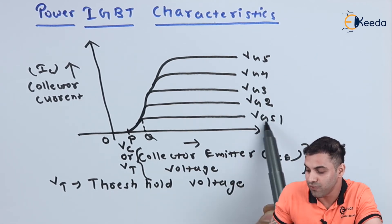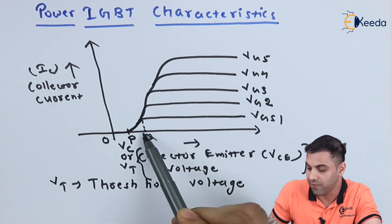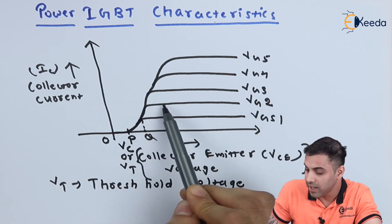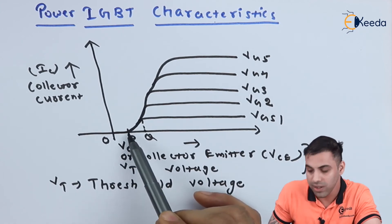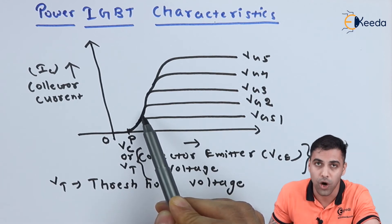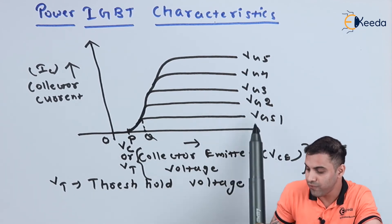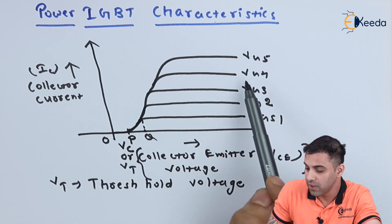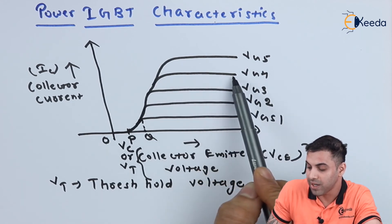For a specific value of the gate-emitter voltage VGS1, the value of collector current is constant after a certain point. If we further increase the gate-emitter voltage to VG2, the collector current increases. Initially there is no flow of collector current; after the collector-emitter voltage crosses the threshold, the collector current slowly increases to a specific point, after which the device turns on and a constant collector current flows. If we further increase to VG3, VG4, the same process continues, and the collector current value increases with each higher gate-emitter voltage.